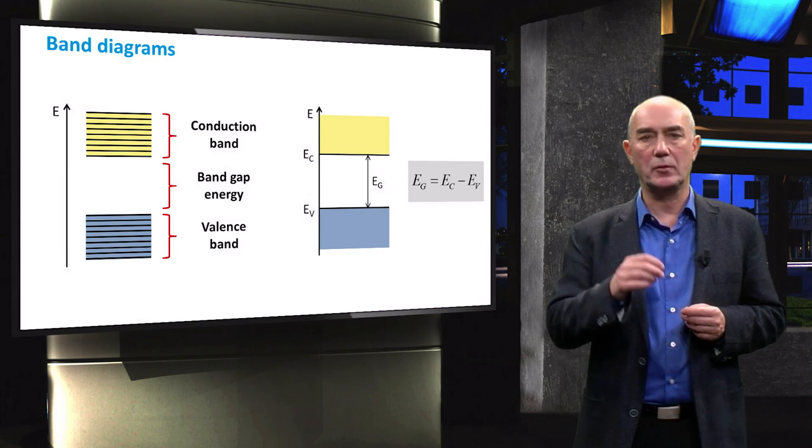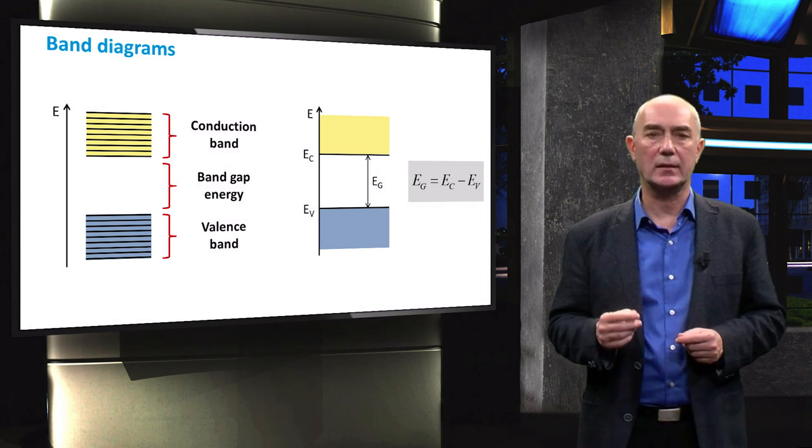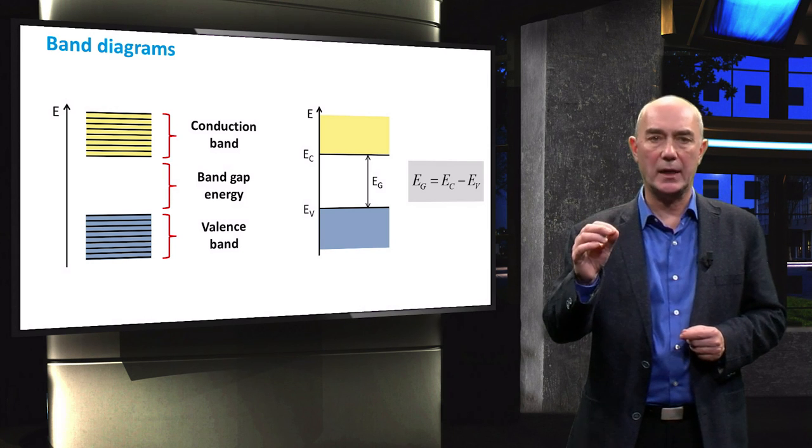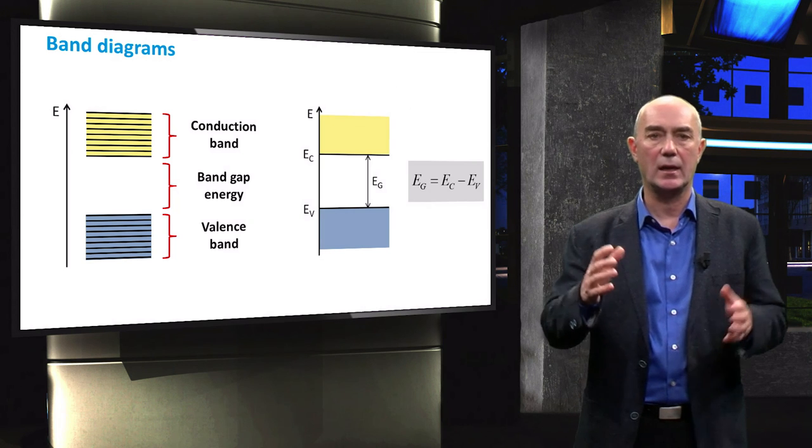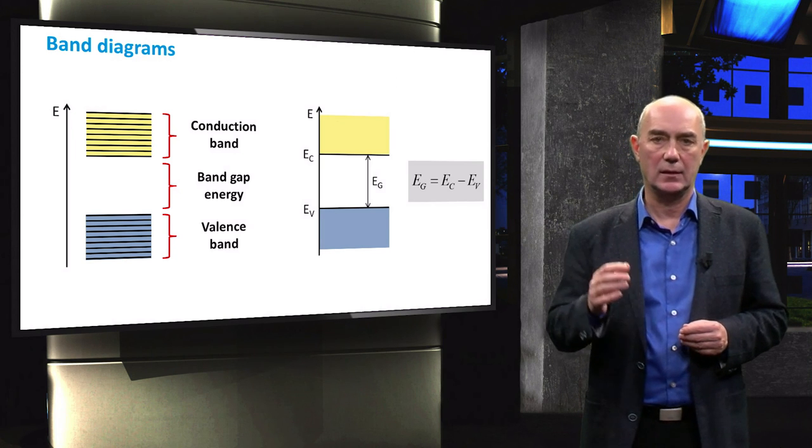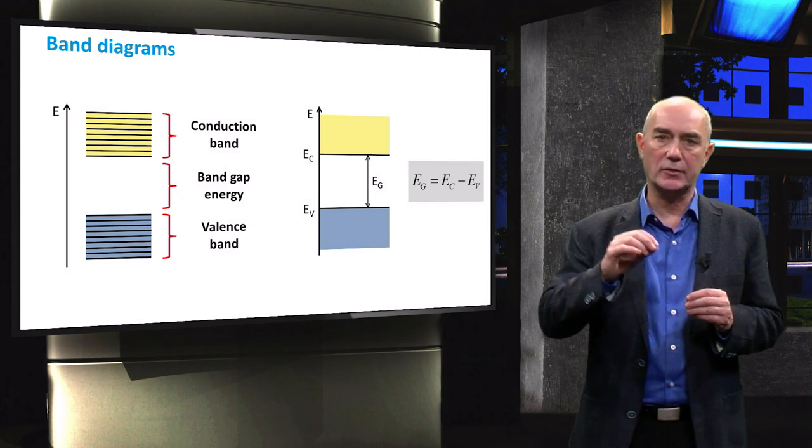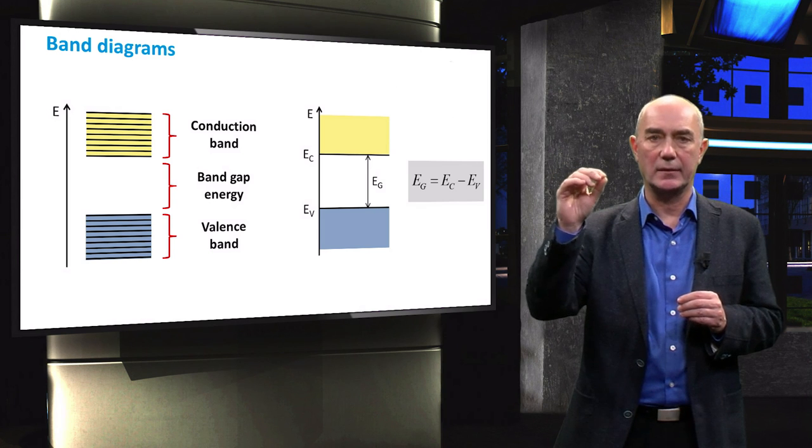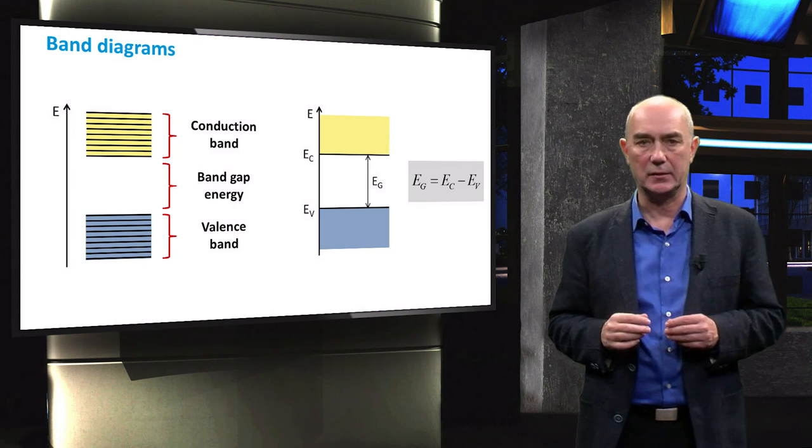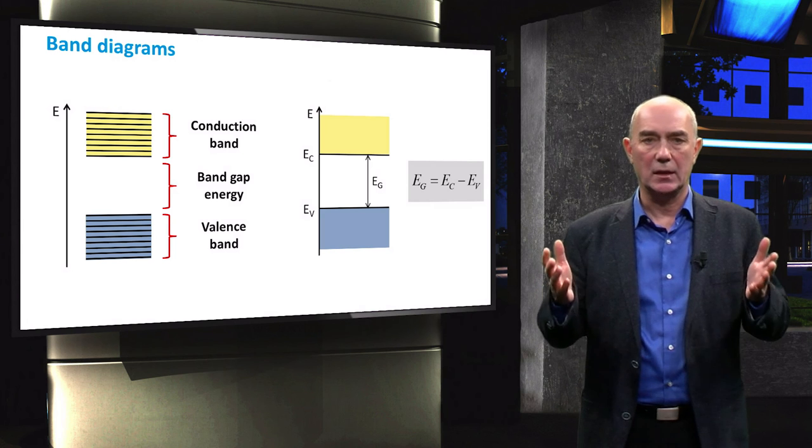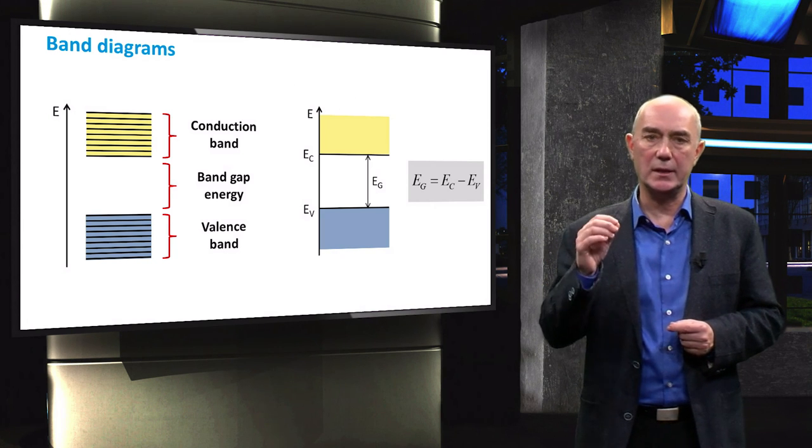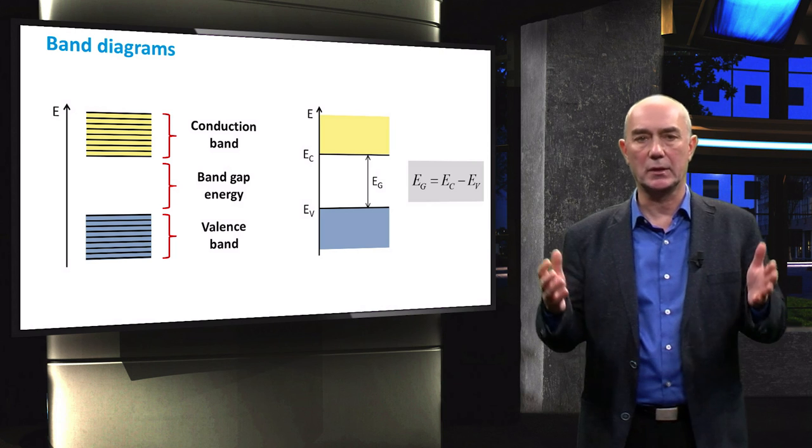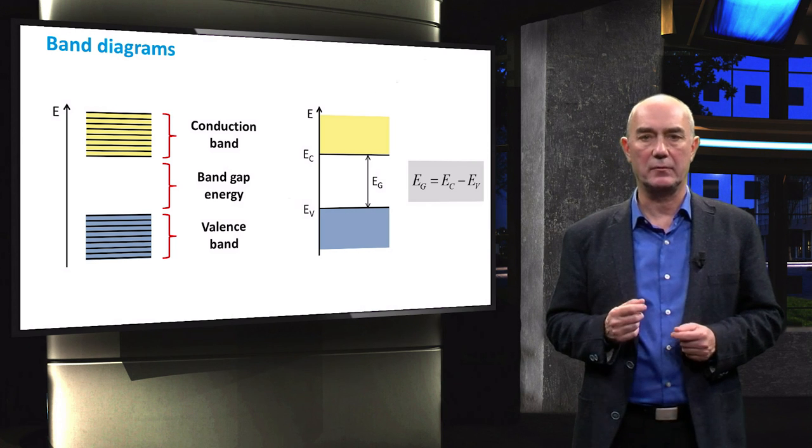As I said before, it is enough for you to just understand that electrons occupying energy levels in the valence band are immobile. When they are excited to the energy levels of the conduction band, they become mobile in a material. However, if you want a deeper explanation for what these bands actually mean, you can always refer to this video.